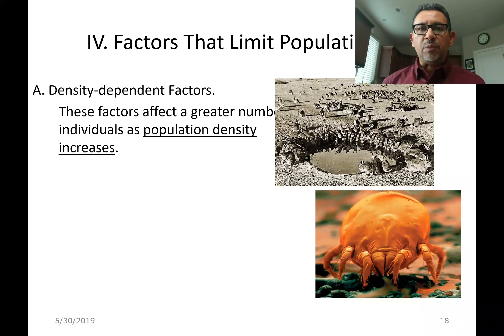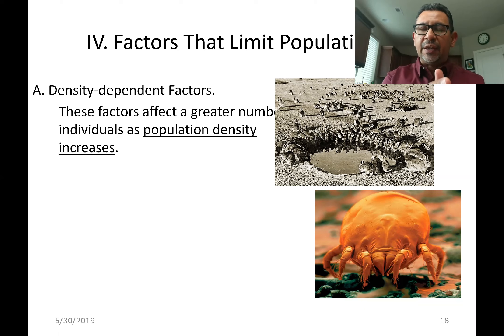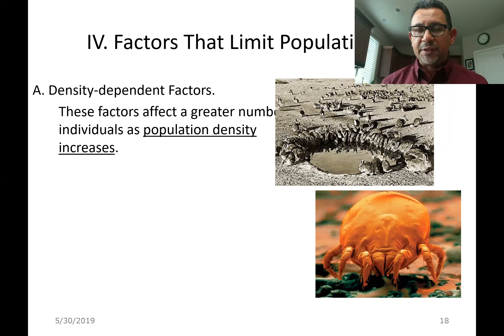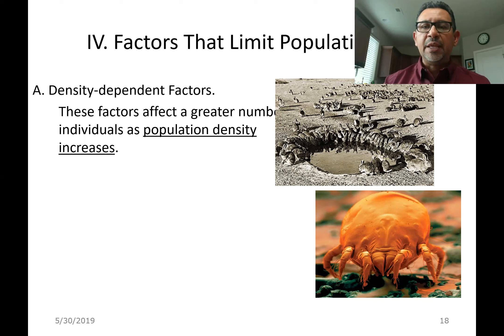We have seen two models for population growth. The exponential growth, where a population can continue increasing without limit, doubling population size at shorter and shorter time intervals. But we've also seen a more realistic logistic growth, in which a population has limits imposed by the environment — resources such as water, food, shelter, space, and mates, just to name a few. Now I want to focus on precisely what factors can limit population growth.